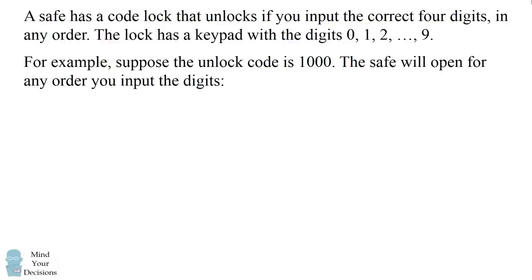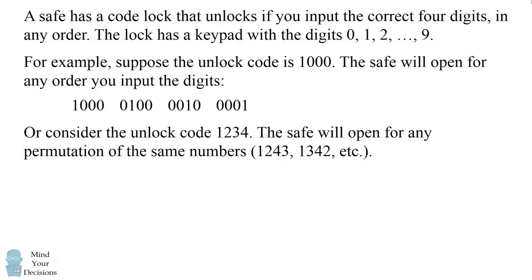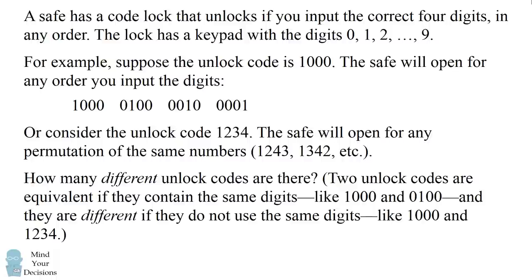The safe will open for any order you input those digits. You could input exactly that code, or you could put the one in the second, third, or fourth position. Or consider the unlock code 1234 — the safe will open for any permutation of the same numbers. Two unlock codes are equivalent if they contain the same digits, and they are different if they do not use the same digits.